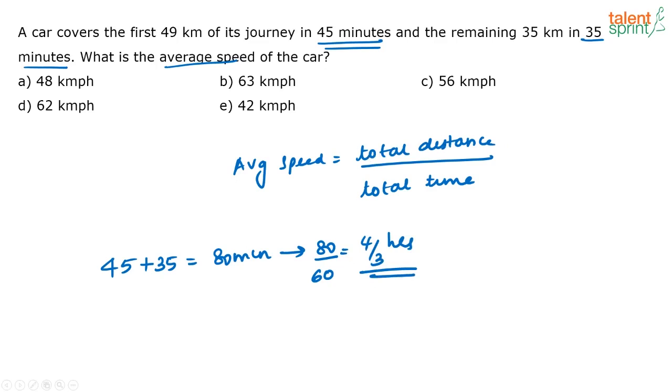What is the total distance traveled by the car? First it travels 49 kilometers, then 35 kilometers. So the total distance is 49 plus 35, or 84 kilometers.